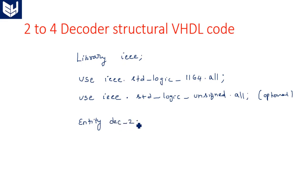Now entity. Entity dec_2to4 is. How many ports and what are the inputs and outputs of this 2 to 4 decoder? If you take a 2 to 4 decoder simple logic diagram, we have two input lines along with an enable pin. These are the two input lines I0, I1.